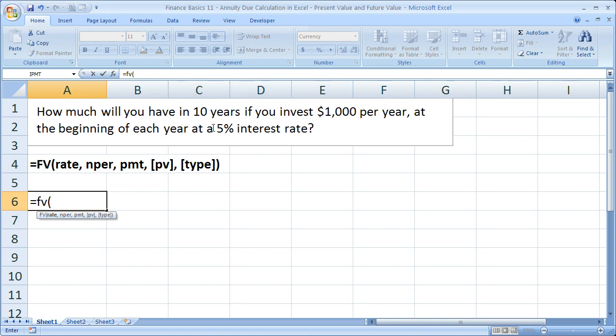Now the rate is simply 5% right here. So we put .05 in for that. Remember you've got to keep the percentage as a decimal here, comma. Number of periods 10, comma.